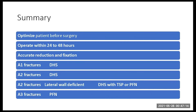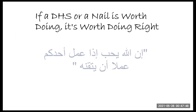In summary: optimize the patient before surgery and operate within 24 to 48 hours. Accurate reduction and fixation is mandatory. For A1 fractures, the DHS will do. For A2 fractures, the stable ones, the DHS will do; if there is lateral wall deficiency, supplement the DHS with a trochanteric support plate or a proximal femoral nail. For A3 fractures, use a proximal femoral nail. If a DHS or a nail is worth doing, it is worth doing right.